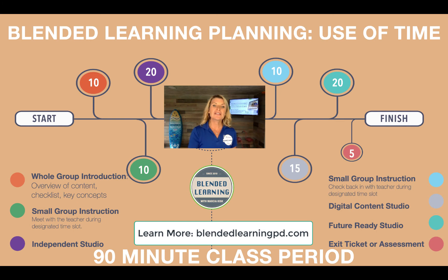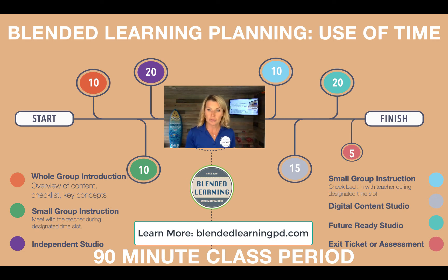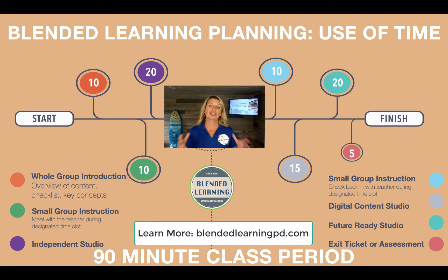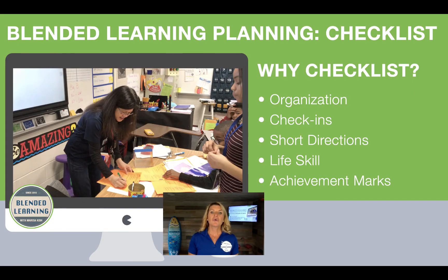From the student point of view in a 90-minute class period, students might have: a 10-minute introduction, 10 minutes with a small group teacher, 20 minutes of independent practice, 10 to 20 minutes on digital content, and 15 minutes doing a choice board. This is what it might look like for students who have longer amounts of time to work on their content.